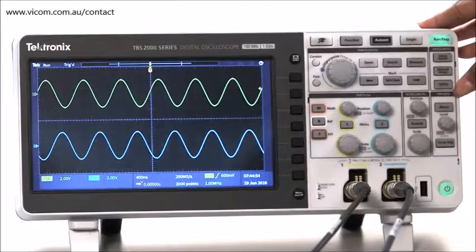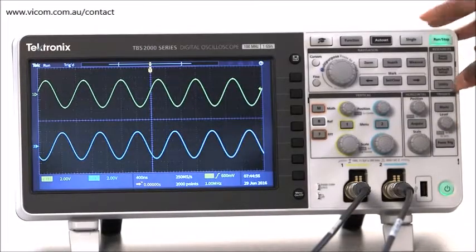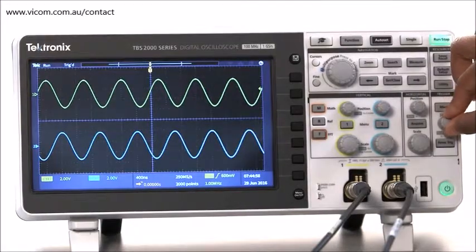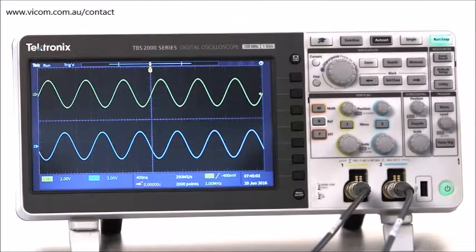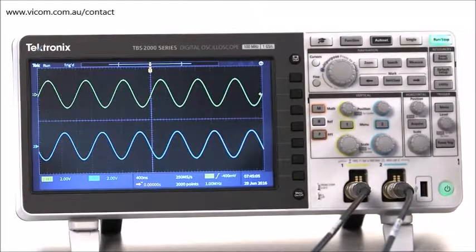Let's take a closer look at the front panel trigger controls. You've already seen me use this control, which controls the trigger level. On this scope, when I adjust the trigger level, it shows up on the display to help me out with the setting.